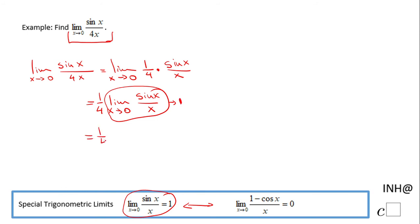And this limit is nothing else than 1, so we end up with 1 over 4 times 1, and the final answer is 1 over 4.